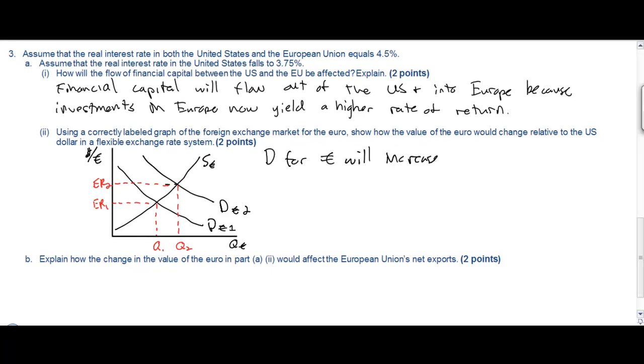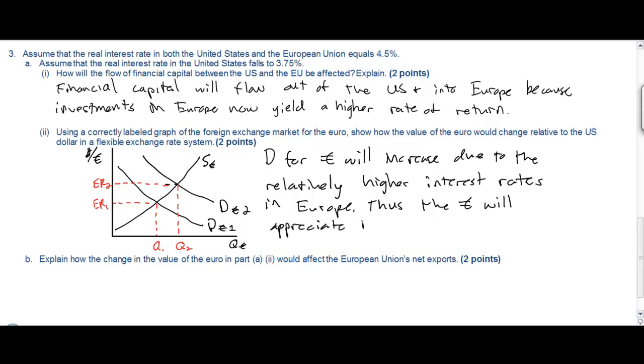So the determinant of exchange rates this question refers to is relative interest rates. If interest rates are relatively higher in Europe than they are in the US, there will be demand for financial investment in Europe, i.e. savings. People will wish to save their money where interest rates are highest. So the demand for that country's currency will rise causing it to appreciate.